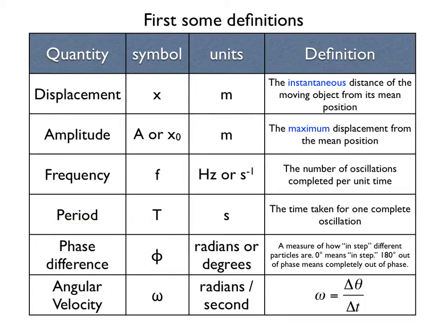A quantity that you might not be as familiar with is phase difference. Suppose you have two waves arriving at the same instant, and the two waves have the same frequency. If the crest of one wave is arriving at the same time as the crest of the other wave, then we say these two waves are in phase. It also means that the trough of one wave would arrive at the same instant as the trough of the other wave.